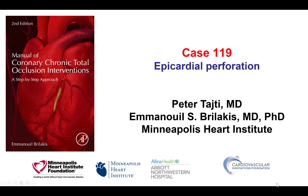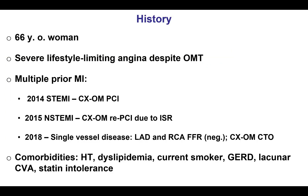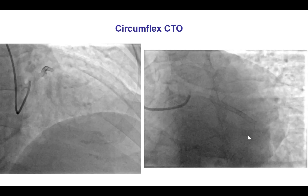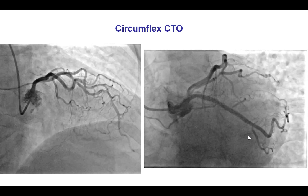Hi, this is Peter Taiti and Manos Brilakis from the Minneapolis Heart Institute and the Cardiovascular Innovations Foundation, presenting case 119 for the Manual of CTO Interventions. This is a case of epicardial perforation. The patient was an older woman with severe lifestyle-limiting angina in the setting of a circumflex CTO. She was on several medications and could not be chest pain-free, which is why she was referred for PCI of the circumflex CTO.